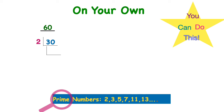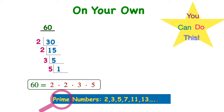Let's continue. Does 2 go into 30? Yes — 15 times. Continue down the ladder. Does 2 go into 15? No, but 3 does — 3 times 5 is 15. Continue down. Does 3 go into 5? No, but 5 does — 5 times 1 is 5. All prime factors are to the left, so the prime factorization of 60 is 2 times 2 times 3 times 5. Check: 2 times 2 is 4, 4 times 3 is 12, and 12 times 5 is 60.